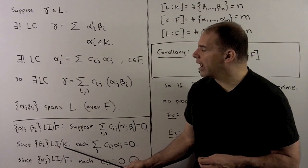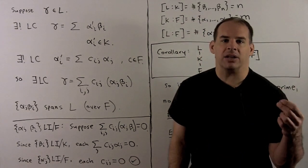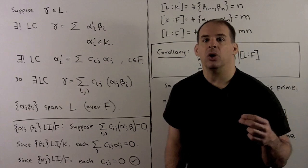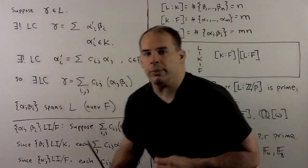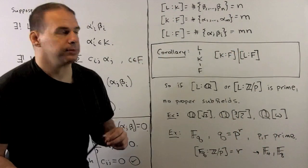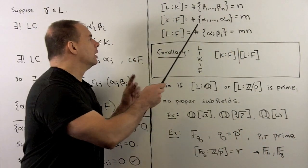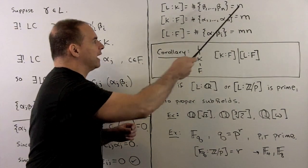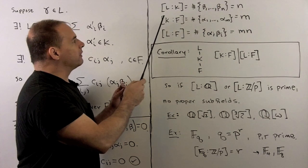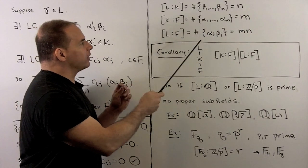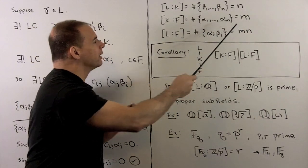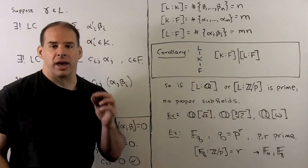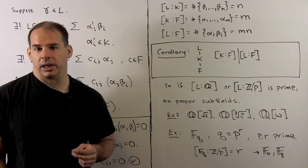Putting the two parts together, the αβ's are a basis for L over F. For the degree formula, we just count: the degree of L over K gives N betas, the degree of K over F gives M alphas, so the degree of L over F is M times N — and that's our formula.